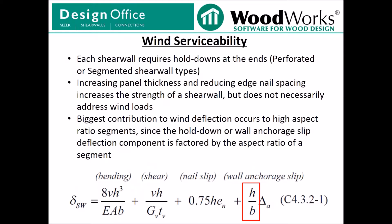When it comes to meeting wind serviceability requirements, it is worth reminding you that each shear line is going to require hold-downs, whether the shear line is specified as perforated or segmented. Increasing a shear line's panel thickness and reducing the edge nail spacing will increase the shear strength of a shear wall, but making these sorts of changes does not necessarily reduce the deflection. Typically, the biggest contribution to wind deflection occurs at the high aspect ratio segments, since the hold-down or wall anchorage slip deflection component in the deflection equation is factored by the aspect ratio of a segment. So segments with high aspect ratios between 2 and 3.5 are going to deflect significantly more than shear lines with low aspect ratios.